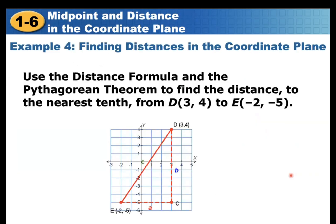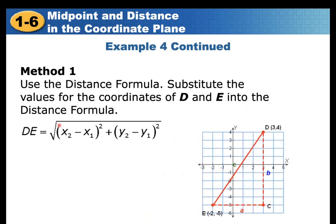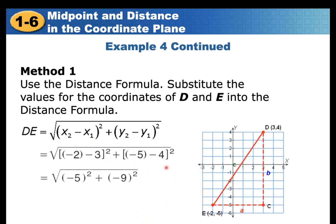Find the distance in the coordinate plane to the nearest tenth from D(3, 4) to E(-2, -5). Using the distance formula: √((-2-3)² + (-5-4)²) = √((-5)² + (-9)²) = √(25 + 81) = √106 ≈ 10.3. That is the length of the hypotenuse.